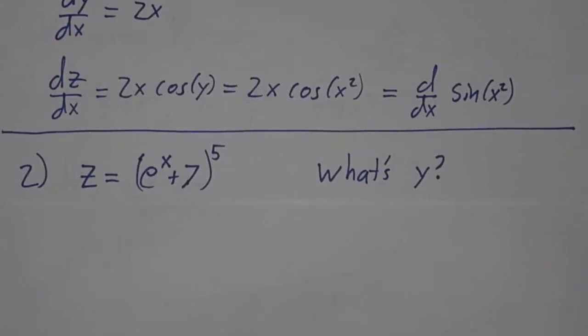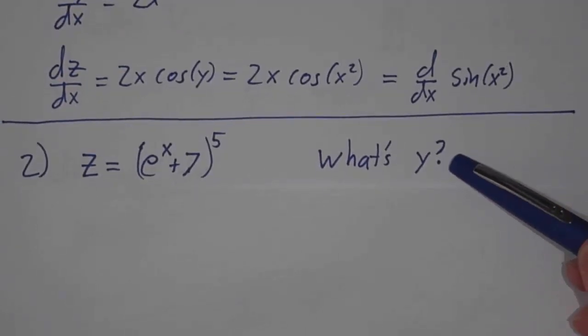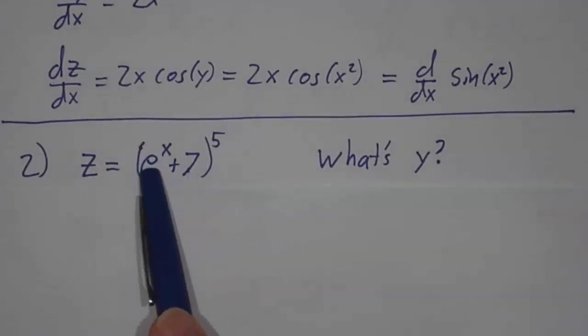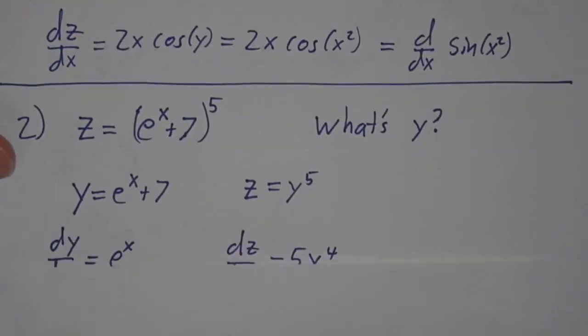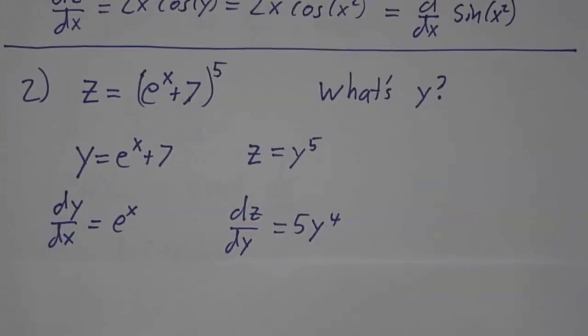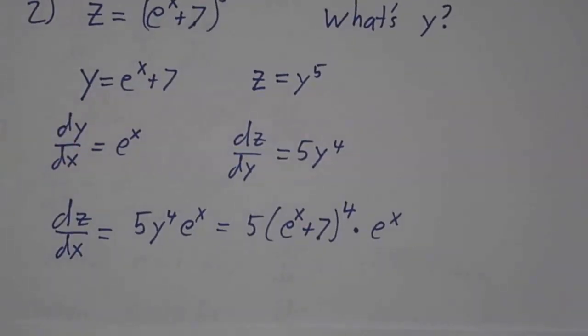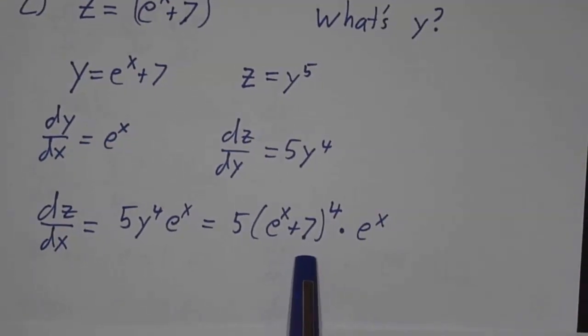Or, if you wanted to know the derivative of (e^x + 7)^5, you'd have to figure out what is y. Here, the most useful thing to call y is the thing in parentheses. So if you let y be e^x + 7, then z is y^5. And then dy/dx is e^x, dz/dy is 5y^4. You multiply them together, and you get that dz/dx is 5y^4 times e^x. So that's 5(e^x + 7)^4 times e^x.